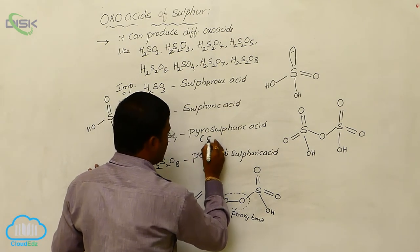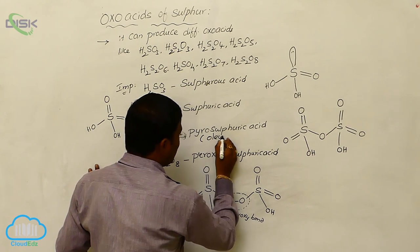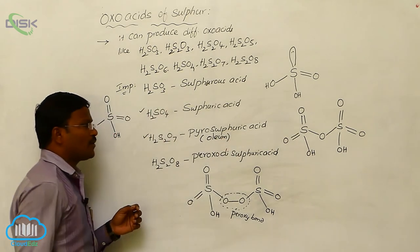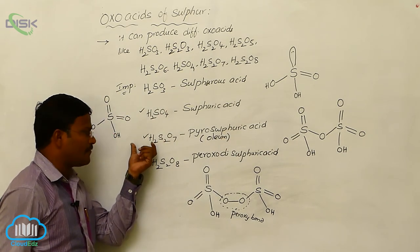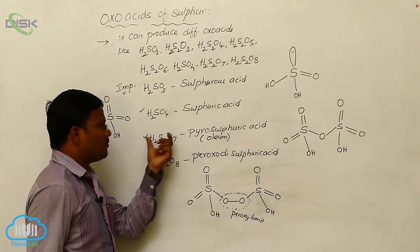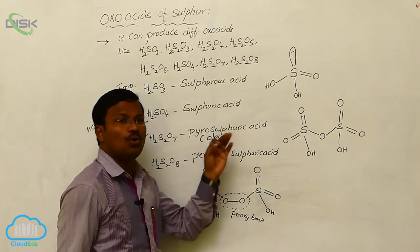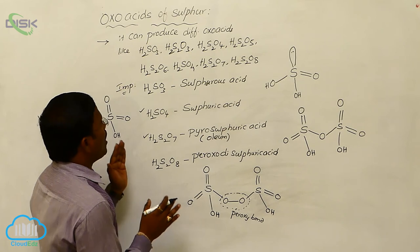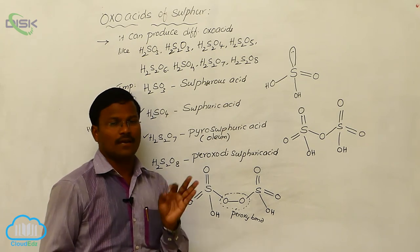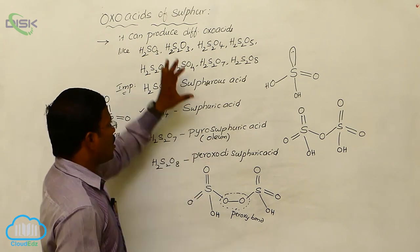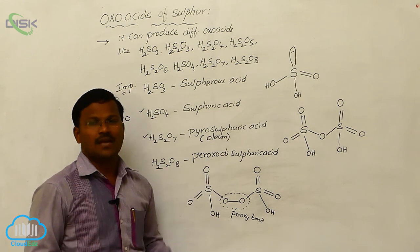Pyrosulphuric acid H₂S₂O₇ is also commonly named oleum. Among all the sulphur oxoacids, H₂SO₄ and H₂S₂O₇ are the most important, and their structures are as described above.